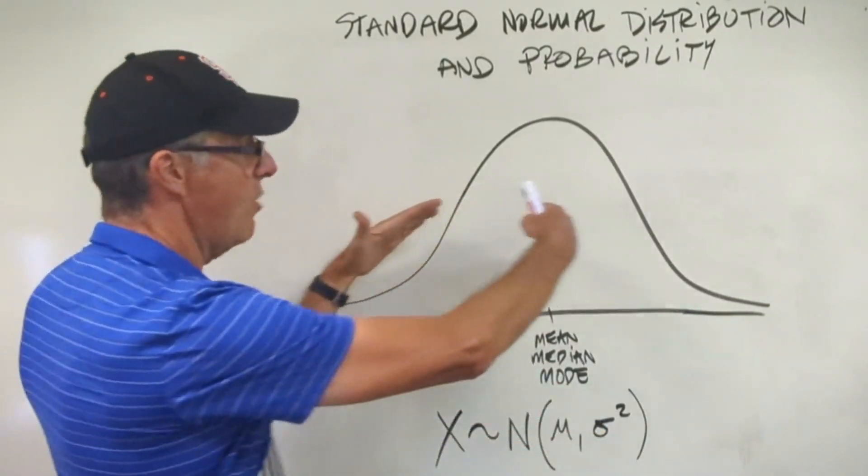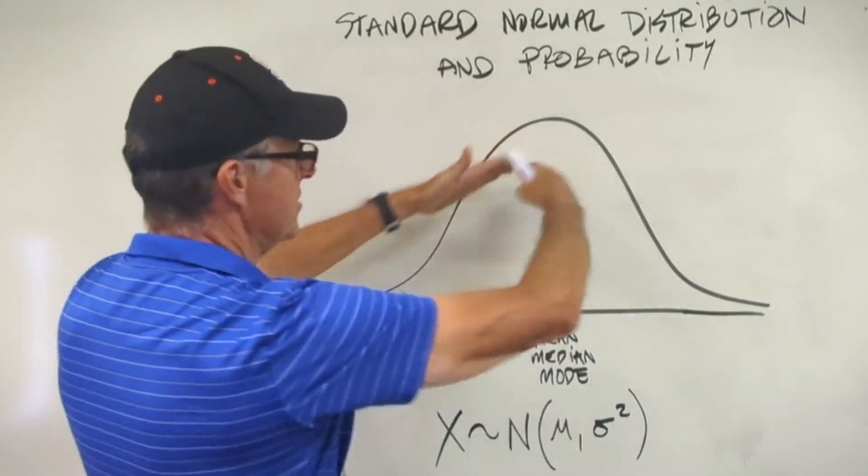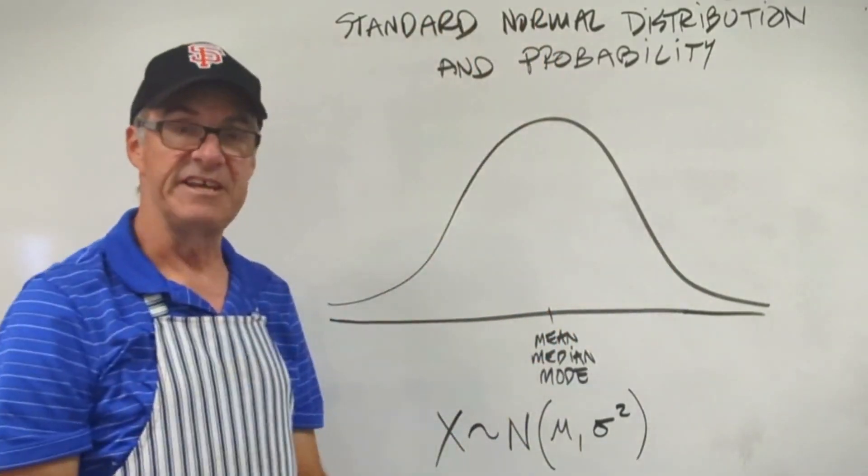Now the spread of data determines how wide that bell-shaped curve is. The higher this number, the flatter the peak and the wider the curve. The smaller this number, the more pointy that is.